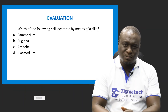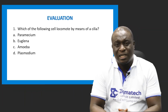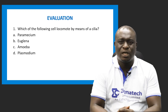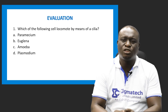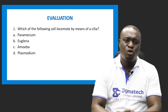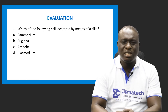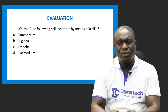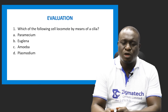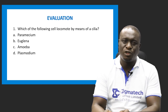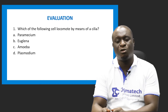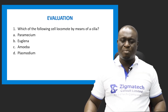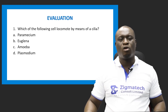Now let's look at some questions to evaluate whether we've understood cellular movement. Question one: which of the following cells locomotes by means of cilia? Euglena is wrong — it makes use of the flagellum. Amoeba is not correct — it makes use of the pseudopodia. Plasmodium makes use of the flagellum for locomotion. The correct answer is A: paramecium, which makes use of cilia for locomotion.